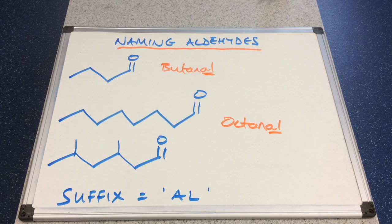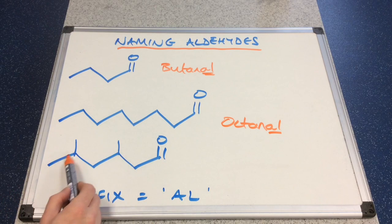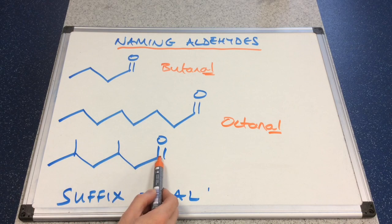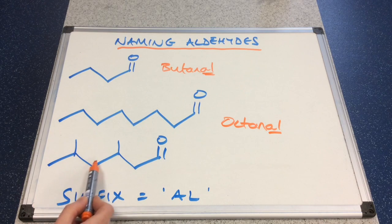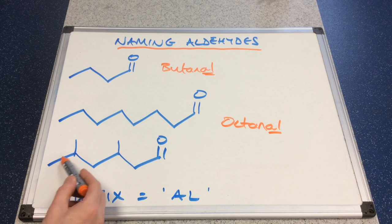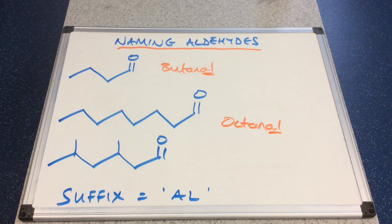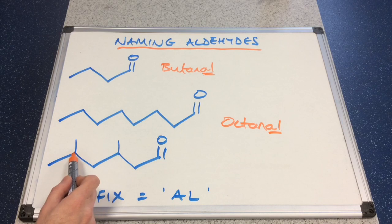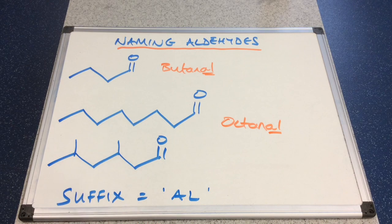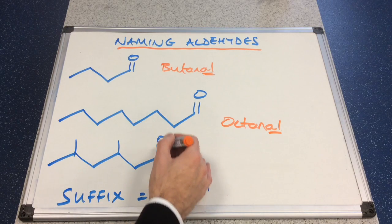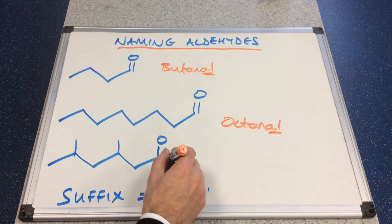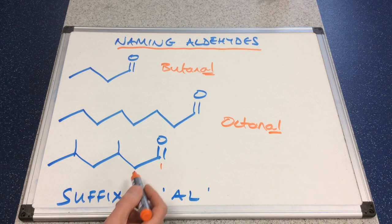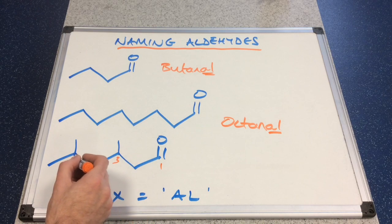And the last one — let's look at the main carbon chain first. We've got one, two, three, four, five, six. Just check this carbon chain: one, two, three, four, five, six. Both are six, so we'll just go for the central one. So that means it's going to be some kind of hexanal. We've got these two alkyl groups here — these are methyl groups. The important thing to note is that the aldehyde functional group fixes carbon number one. So that makes two, three, four, five.